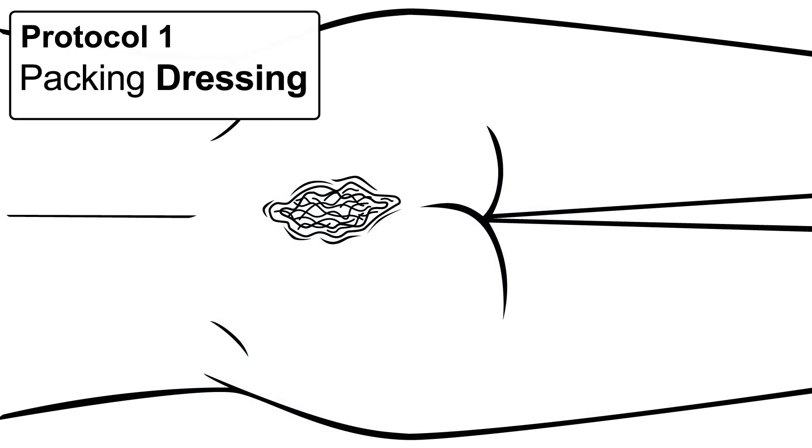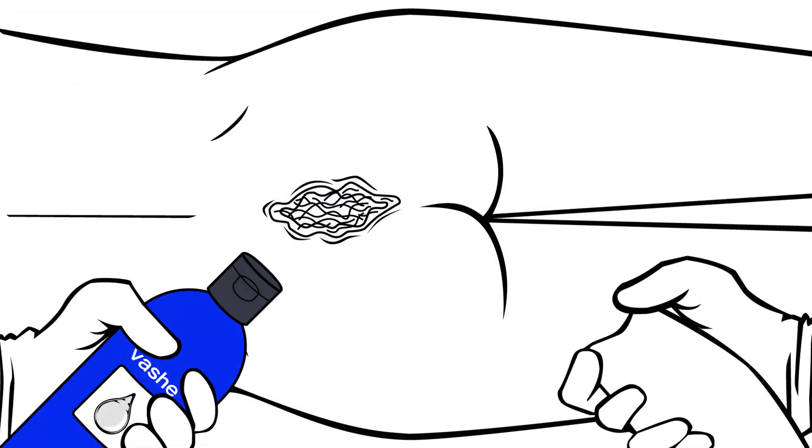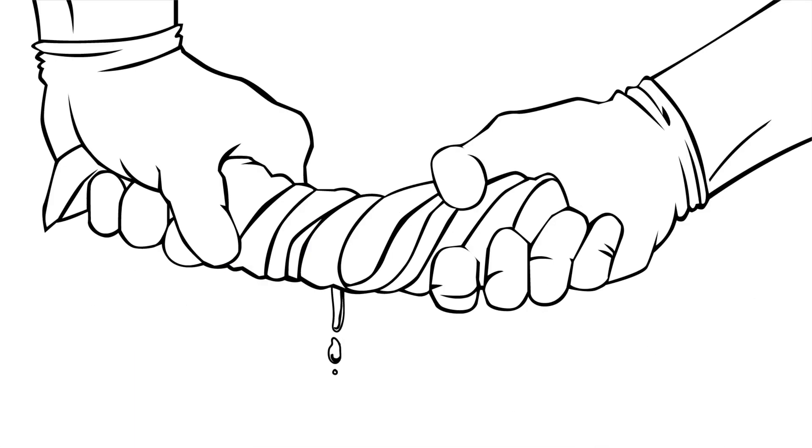One protocol is using Vosh as a packing dressing. Clean wound with Vosh and pat dry. Pour Vosh onto gauze, then squeeze until no longer dripping.